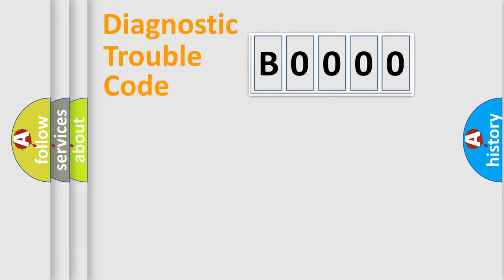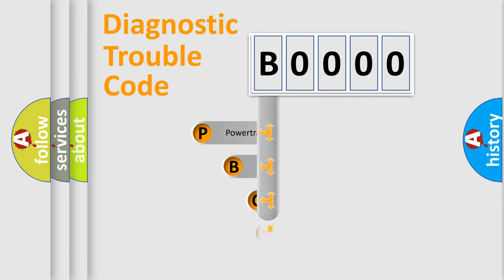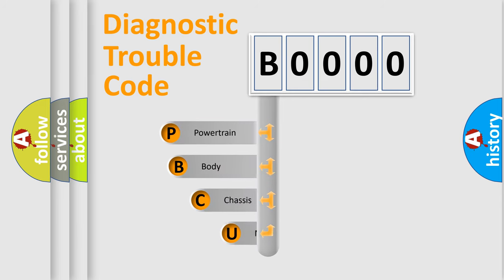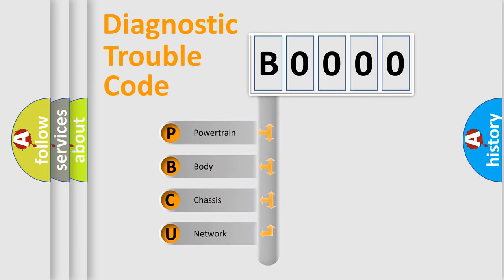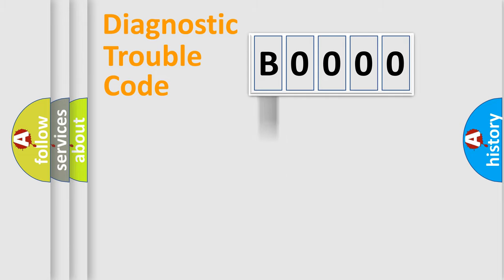Let's do this. First, let's look at the history of diagnostic fault code composition according to the OBD2 protocol, which is unified for all automakers since 2000. We divide the electric system of an automobile into four basic units: Powertrain, Body, Chassis, and Network.